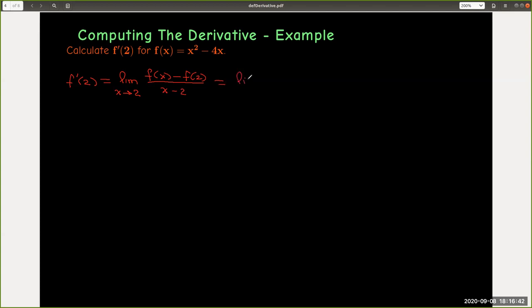[x² - 4x] minus, now if I replace 2 in place of x I'll get 4 - 8, so I'll get minus negative 4, all over (x - 2).